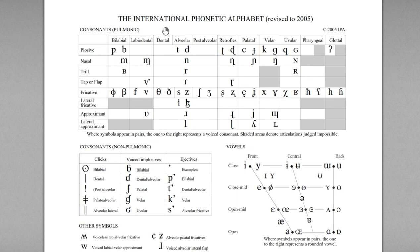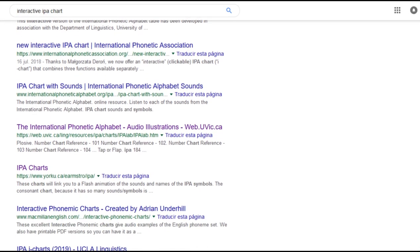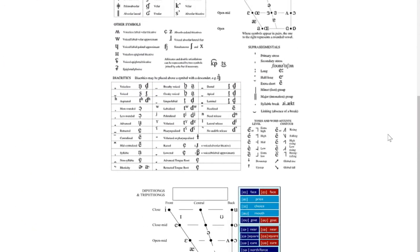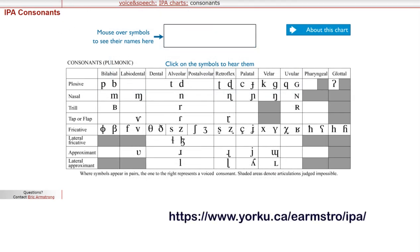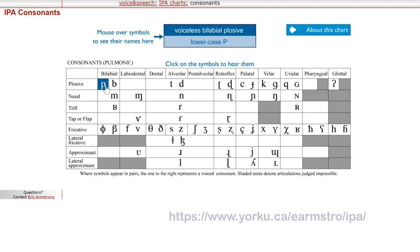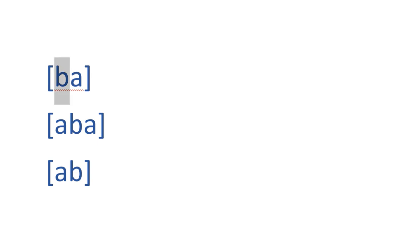Essentially, each symbol is a written representation pointing to a sound. To find out what that sound is, search for interactive IPA charts. For example, there's a York University website where if you go to consonants and press a symbol, it gives you the sound followed by a vowel, then surrounded by vowels on both sides, then preceded by a vowel with nothing following.